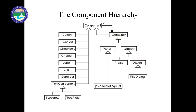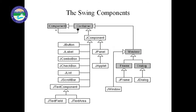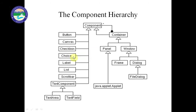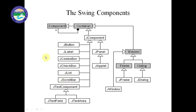You can see here another diagram — this is the Swing diagram. In Java Swing, we have all the same elements as in Java AWT: button, canvas, checkbox, choice, label, list, scroll bar — all components are also used in Java Swing, but 'J' is prefixed here.